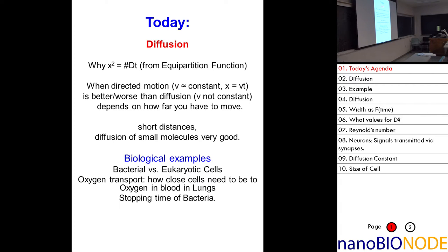If t is small enough that the cell can tolerate that time difference — for example, oxygen diffusing from the outside of the cell to the inside — it's small enough that the cell does not need to use energy to do active transport using regular velocity.